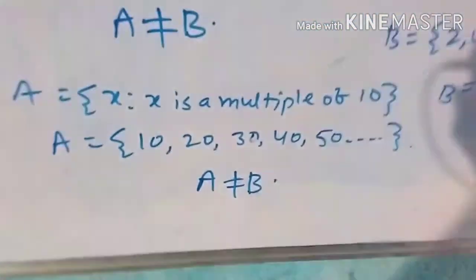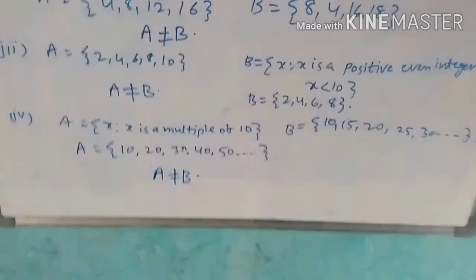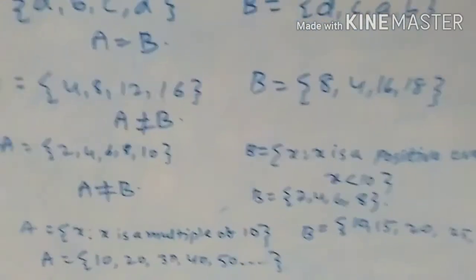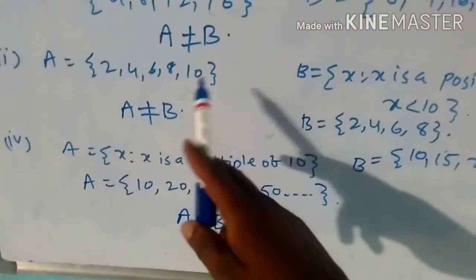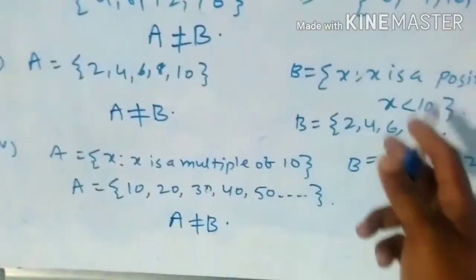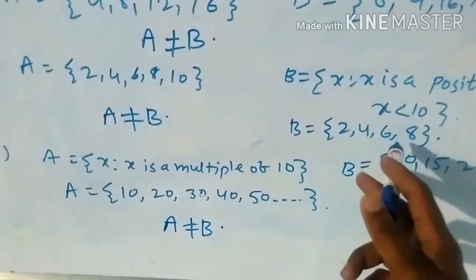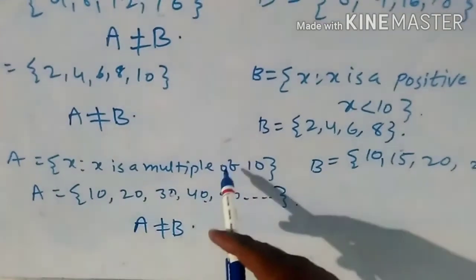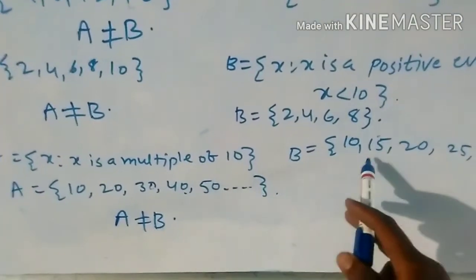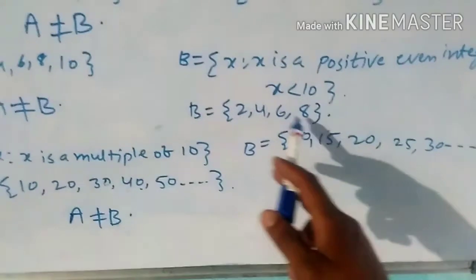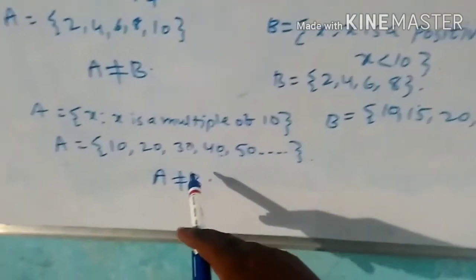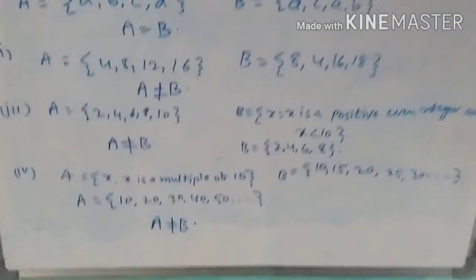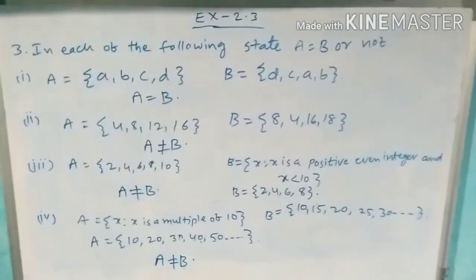A is equal to B means B is equal to A also. All the elements in set A and set B must be equal. If all elements of set A are present in set B, but all elements of set B are not present in set A, then A is not equal to B. I think you understand.